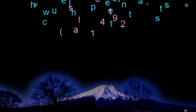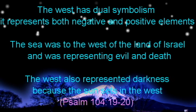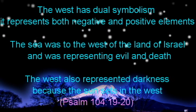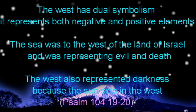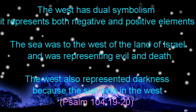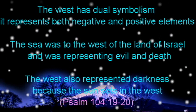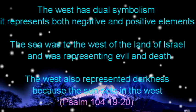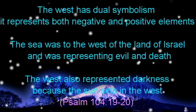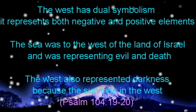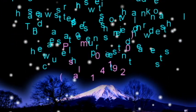The west has dual symbolism; it represents both negative and positive elements. The sea was to the west of the land of Israel and was representing evil and death. The west also represented darkness because the sun sets in the west. Read Psalm 104 verse 19 to 20.